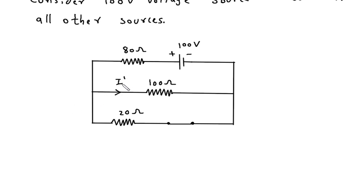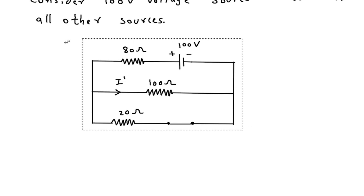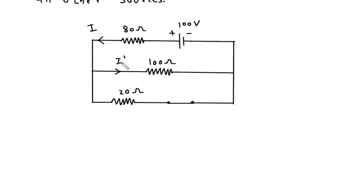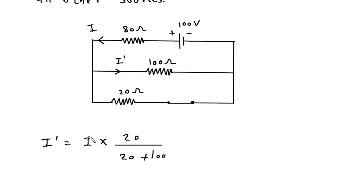Now we have to find I'. Here we will use the current division rule. To use the current division rule, we need the total current I. According to current division rule, I' is equal to the total current into the opposite branch resistance, that is 20 ohm, divided by 20 plus 100. So first we have to find the value of this current I.